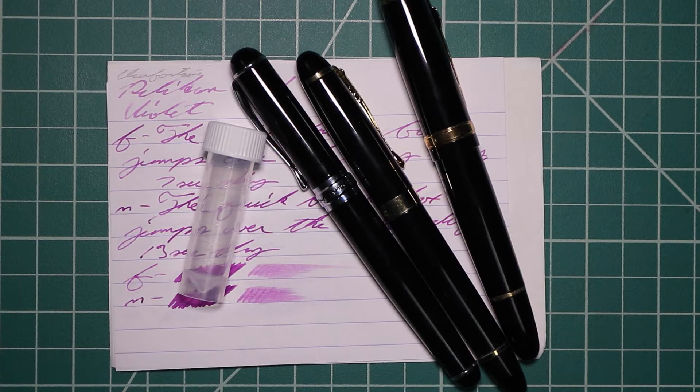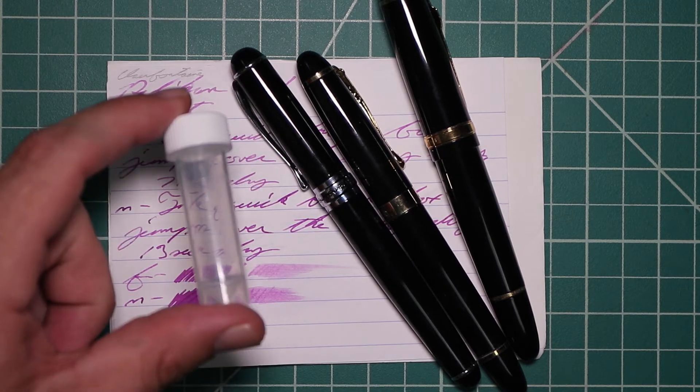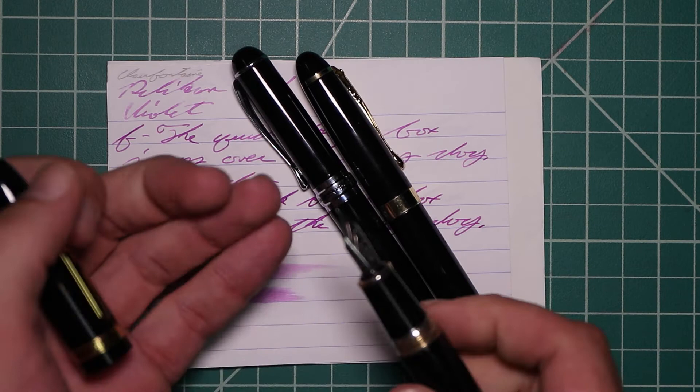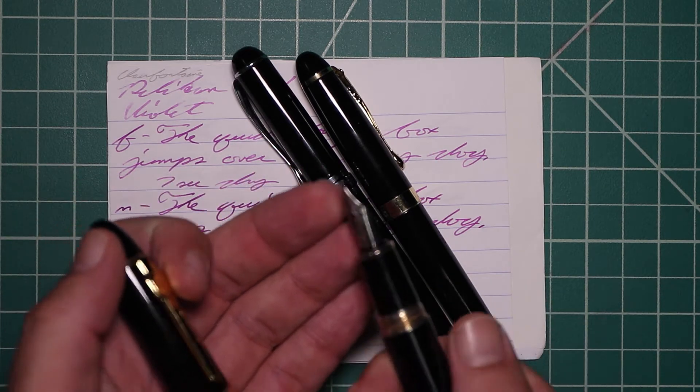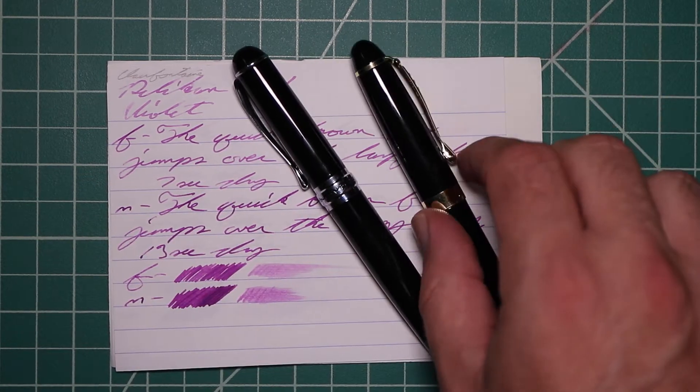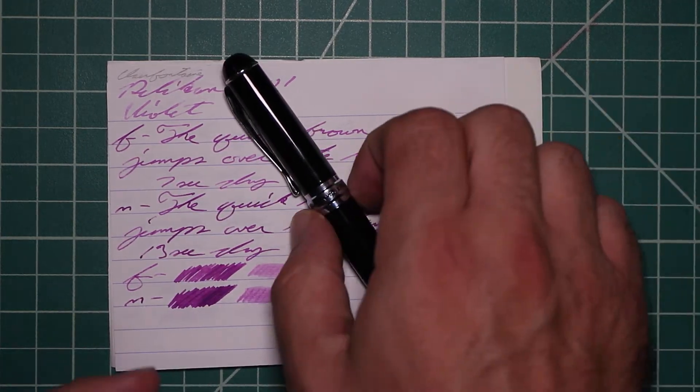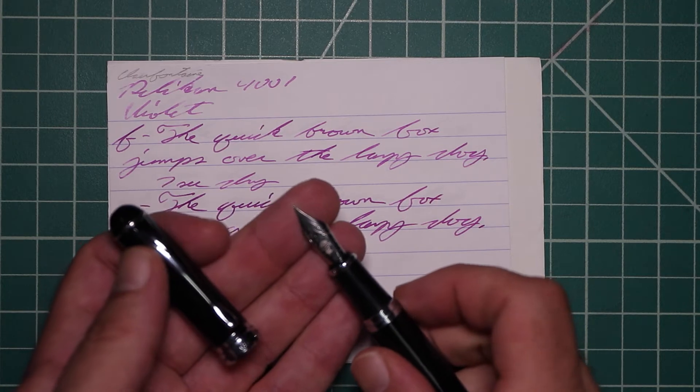Now, let's look at the writing sample. I picked this ink up in sample form, so it came in a vial like this. And to keep my writing samples consistent, I use a Jinhao 159 with a Goulet 1.1 stub, a Jinhao X450 with a Goulet medium, and a Jinhao X750 with a Goulet extra fine.